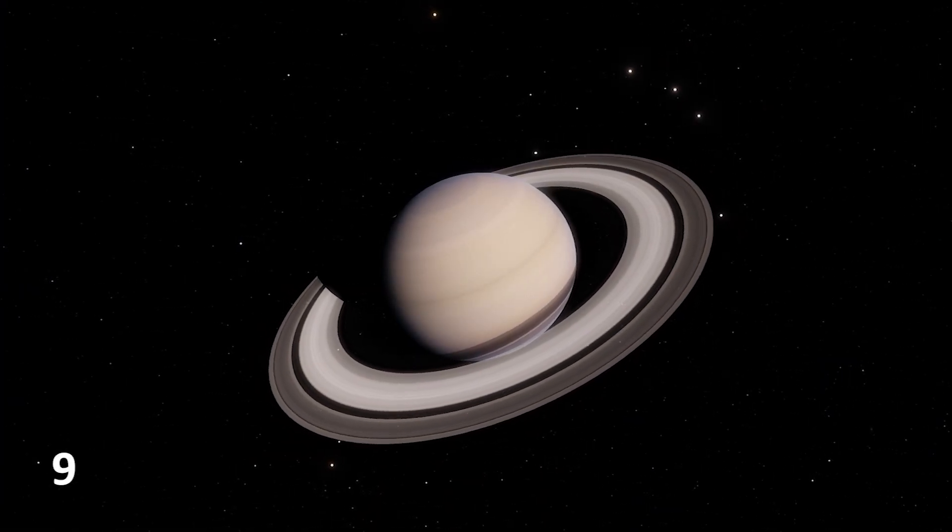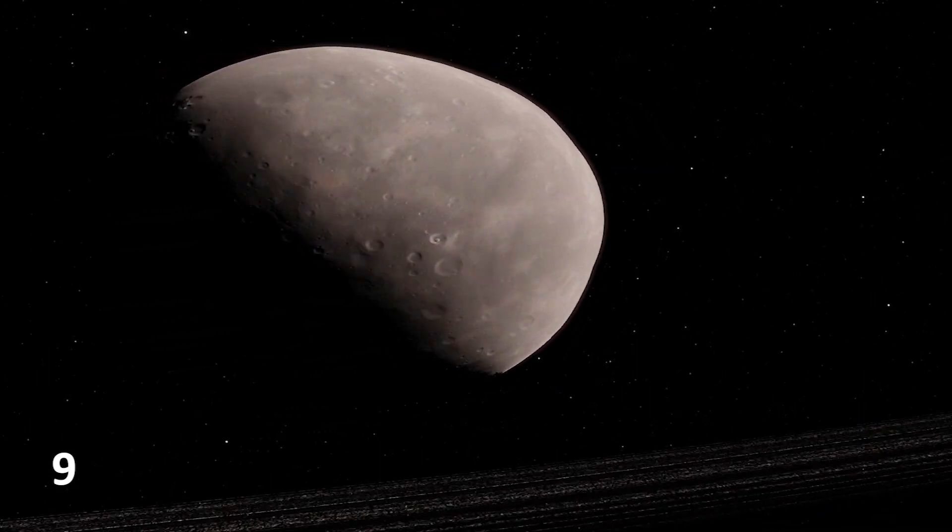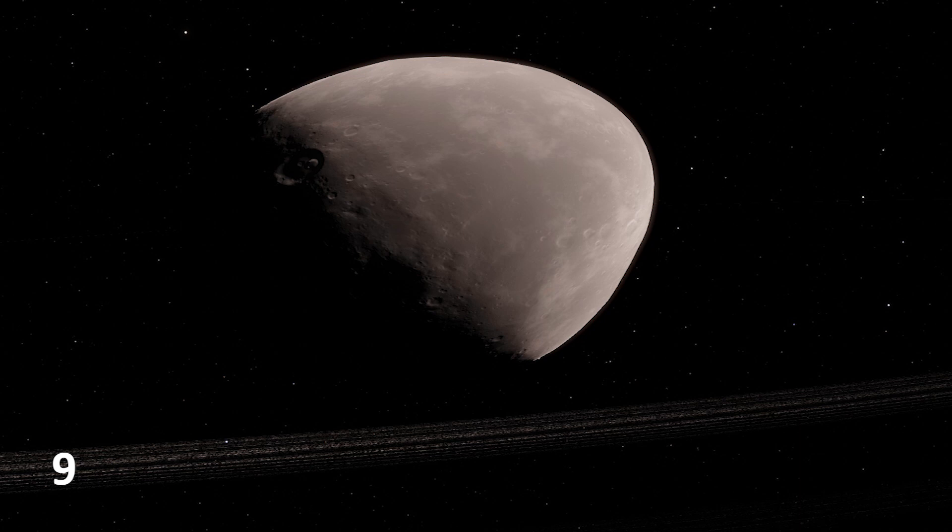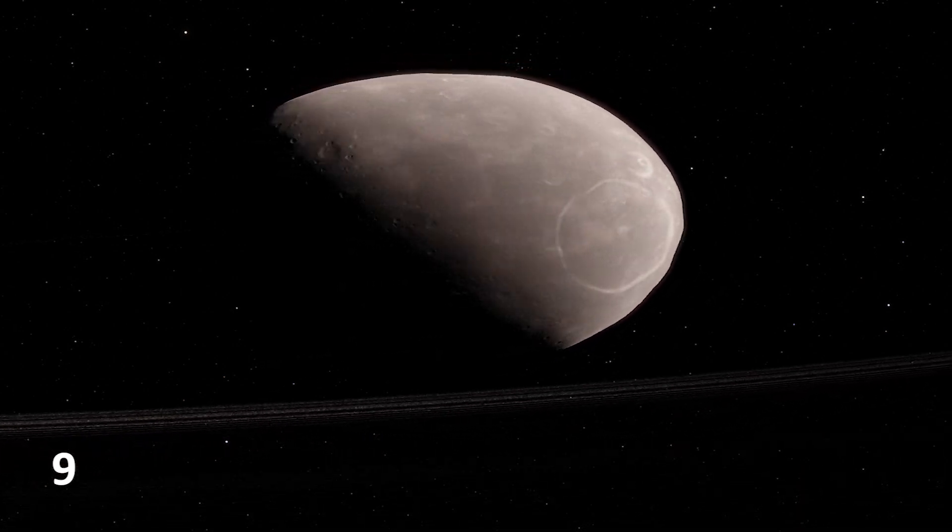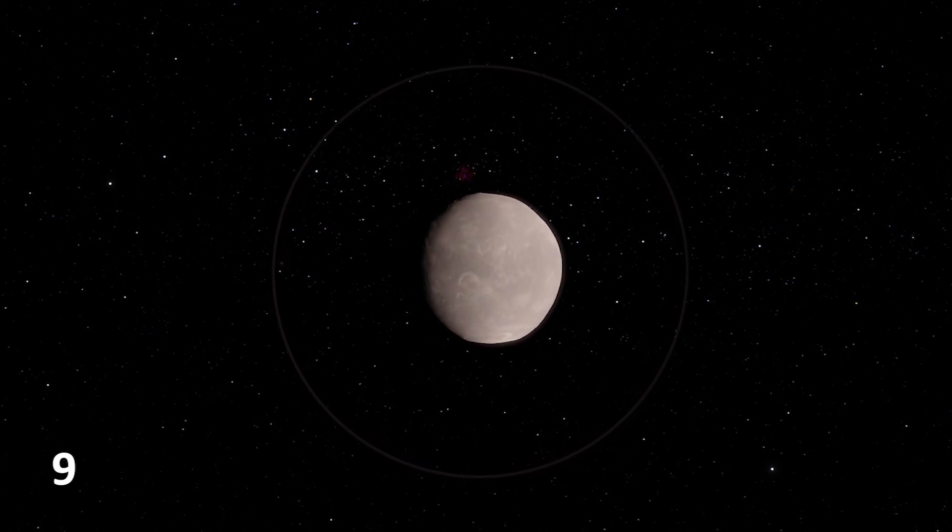Planets are not the only ones to have rings. A remote asteroid called Chariklo is surrounded by two dense and narrow rings. This is the smallest object by far found to have rings.